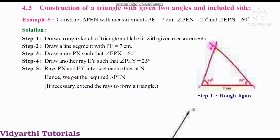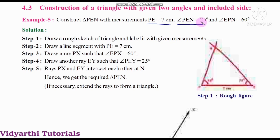Here we have Example 5. Construct triangle PEN with measurements: PE is equal to 7 cm, angle PEN is equal to 25 degrees, and angle EPN is equal to 60 degrees. Here we are given a side and two angles — PE = 7 cm, angle PEN = 25 degrees, and angle EPN = 60 degrees.